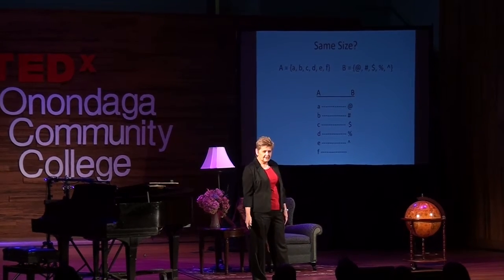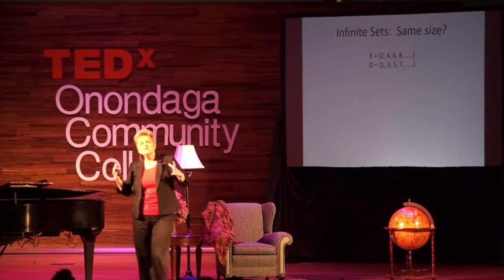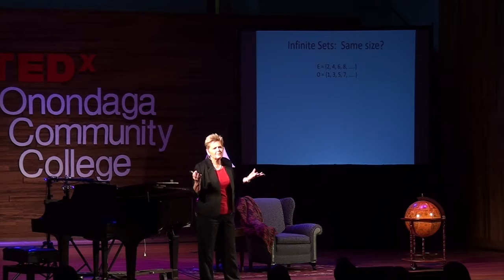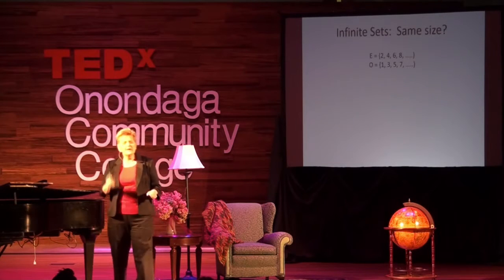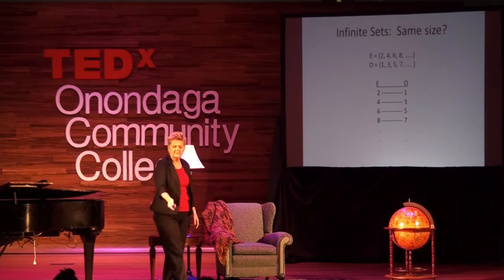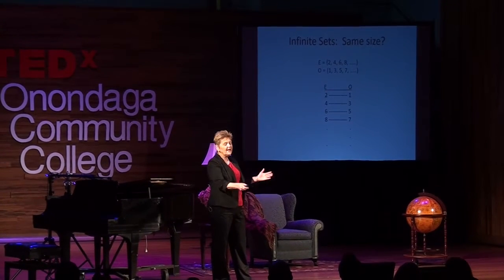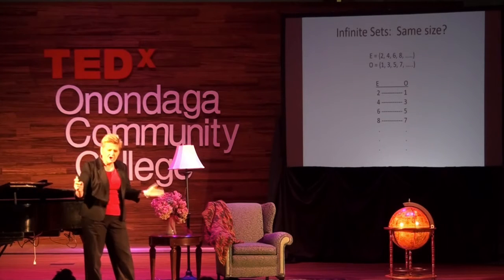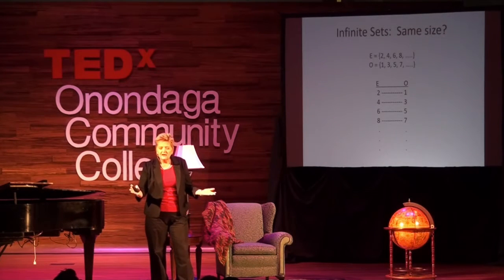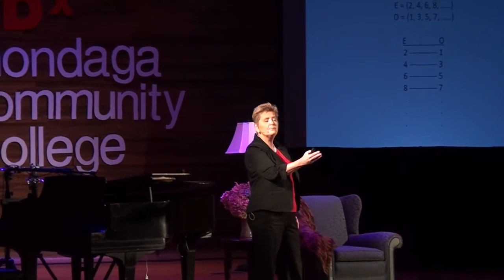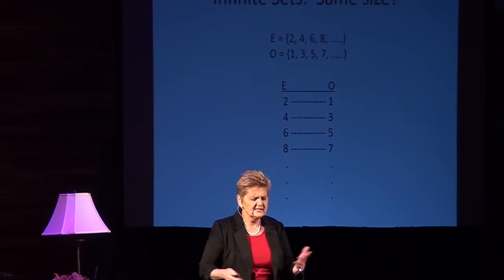Now let's take this concept to infinite sets. Let's look at a couple of infinite sets — the even and the odd numbers. In your heart of hearts, do you think the even and the odd numbers have the same number of elements? Probably yes. I can't count the elements in E, and I can't count the elements in O, but can I show a one-to-one correspondence between them? Match every element of E with exactly one less than it in set O, and you will have a matched set forever. These two sets are the same size — this is a proof. The evens and the odds have the same number of elements.